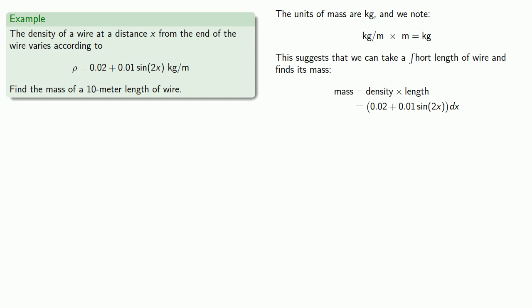Well that's the mass of a short length. We want to sum up those masses from where we start to where we end. And since we're looking for the mass of a 10 meter length of wire, that means the distance from the end of the wire is going to vary from 0 to 10. And we can evaluate this definite integral.